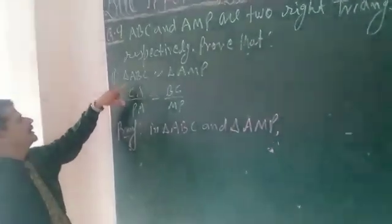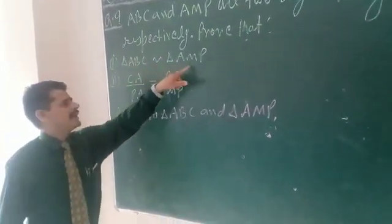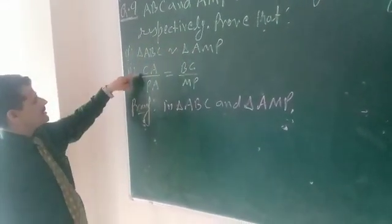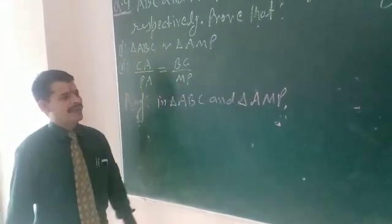What are the things? First one, triangle ABC similar to triangle AMP. Second one, CA upon PA will be equal to BC upon MP.